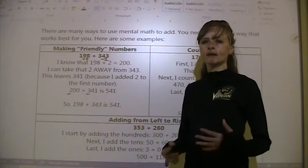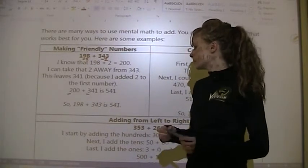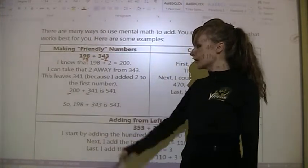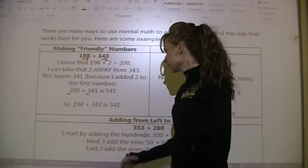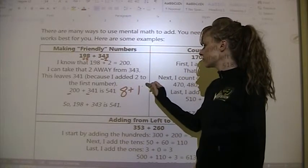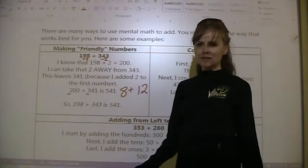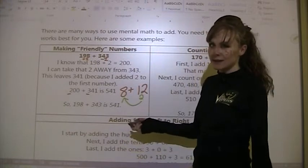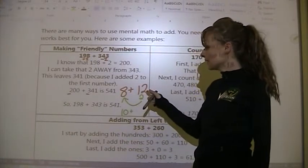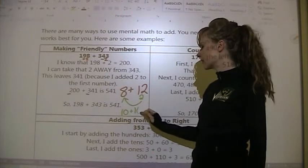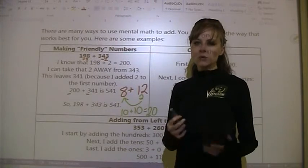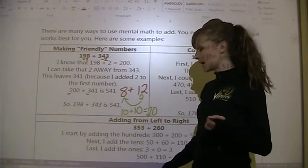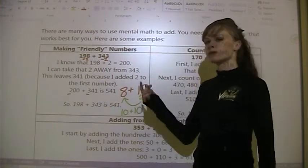You have to use that strategy when the numbers are close enough to make a friendly number. For example, 8 plus 12: if I take 2 from 12 and put it onto 8, I end up with 10 plus 10, which is 20. That's the kind of mental math I do in my head all the time, especially when adding scores on an assignment.